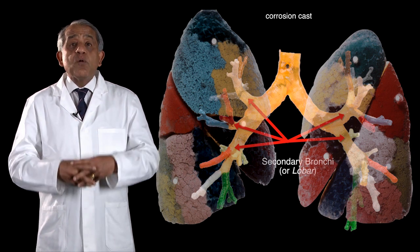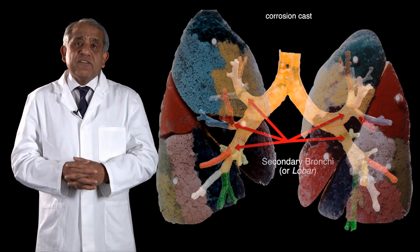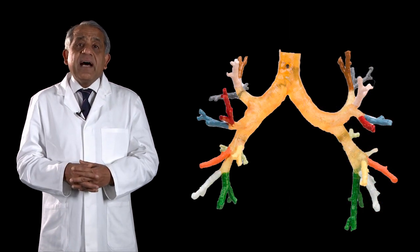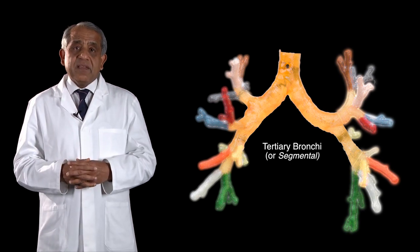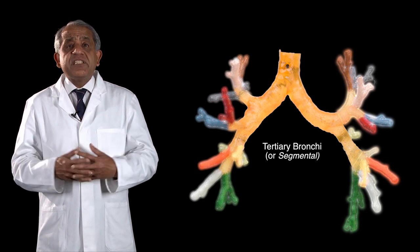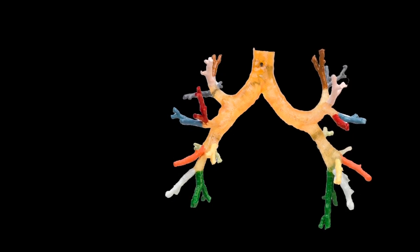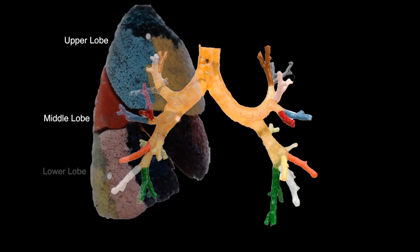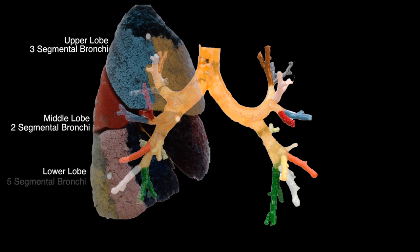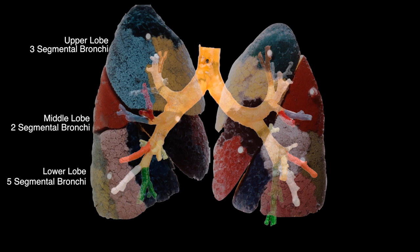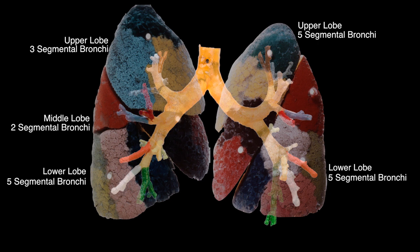Each lobar bronchus within its lobe breaks up into the next generation, called tertiary or segmental bronchi. The number of segmental bronchi within each lobe is fairly constant. On the right side, the upper lobe has three segmental bronchi, the middle lobe has two, and the lower lobe has five, making a total of 10 segmental bronchi in the right lung. On the left side, typically there are five segmental bronchi in the upper lobe and five in the lower lobe, also making a total of 10.